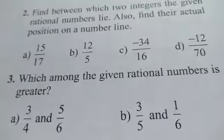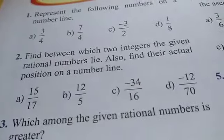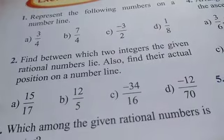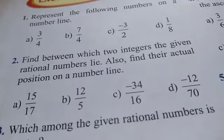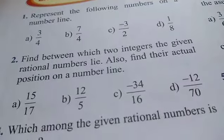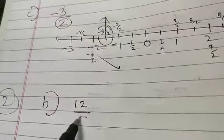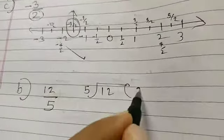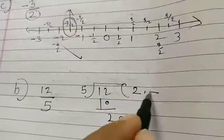Now we will take the second question: find between which two integers the given rational numbers lie, and also find their actual position on the number line. I am going to tell you one part — question 2, part B — that is, you have to show 12 by 5. You can divide it: 12 divided by 5 gives 2 remainder 10, then 20 divided by 5 gives 4.